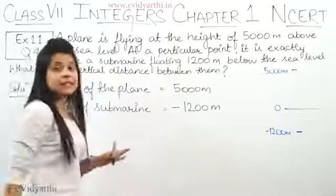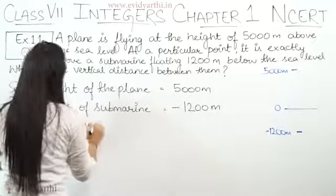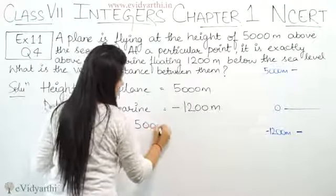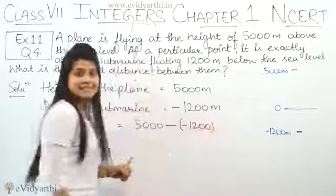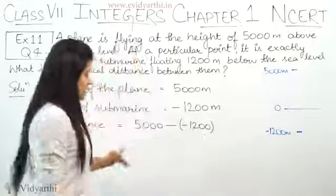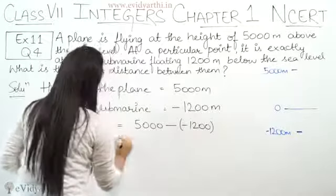Now we will write vertical distance. Distance equals 5000 minus minus 1200. Check it: 5000 minus negative 1200. Now, what is minus minus? Plus.